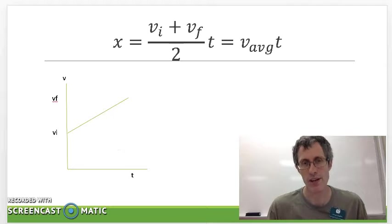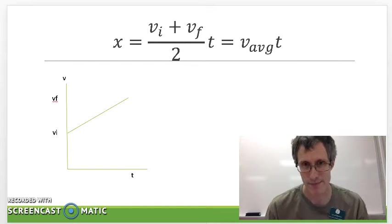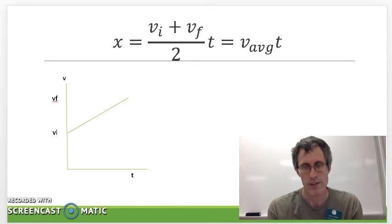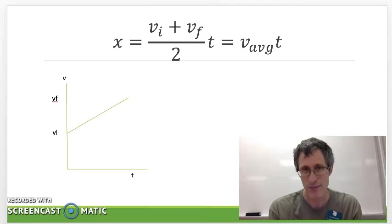Let's go to the second one. We're going to derive this one graphically. So this one tells us that the distance covered equals the average velocity times the time.